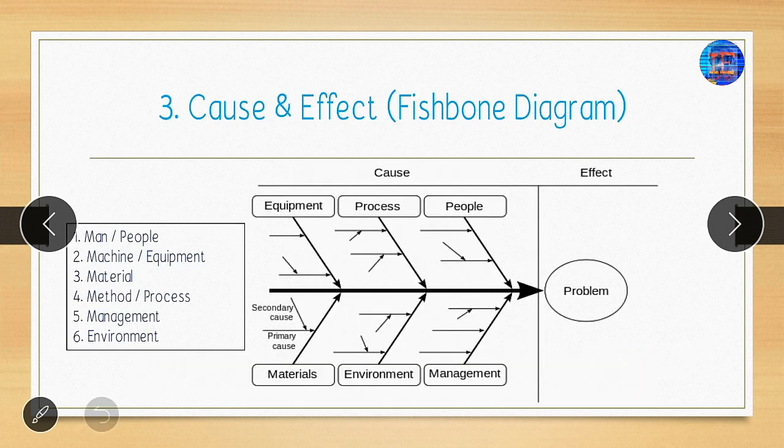The third tool is the cause-and-effect or fishbone diagram. In this, we do the analysis according to 5M and 1E: Man, Machine, Material, Method, Management, and Environment. Using the fishbone diagram, we find the probable causes related to each of these categories.